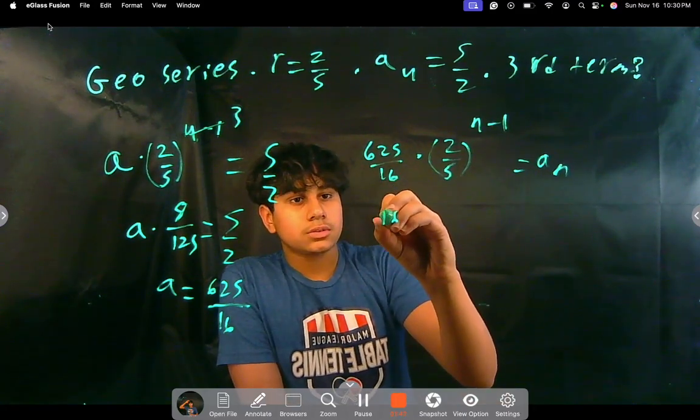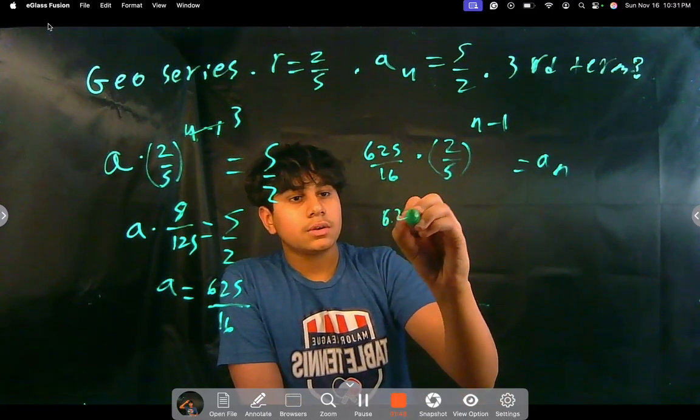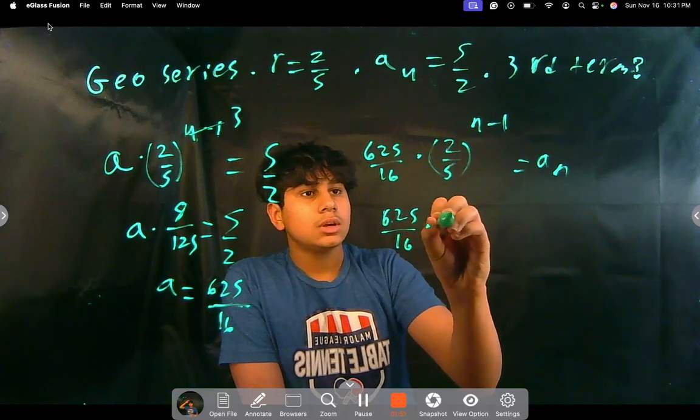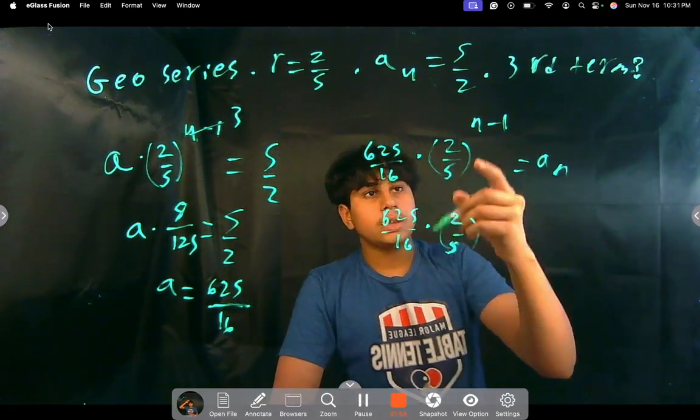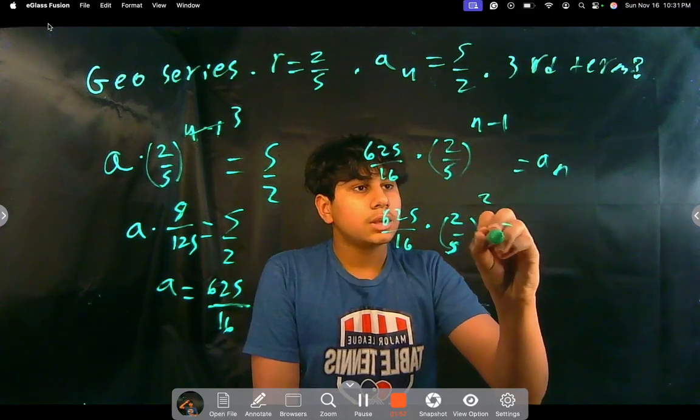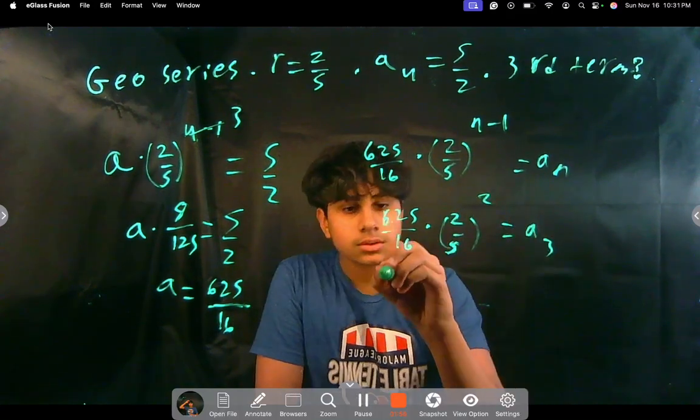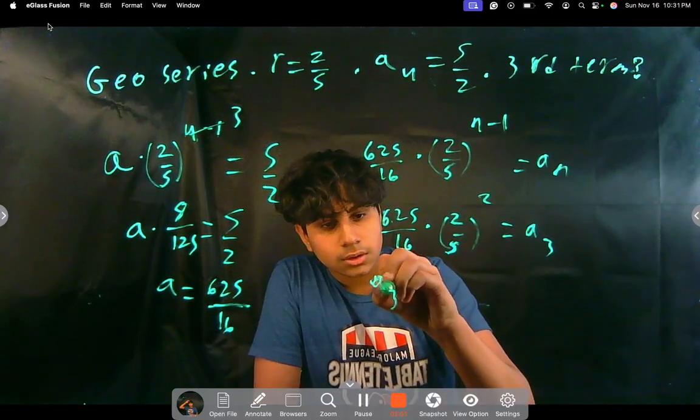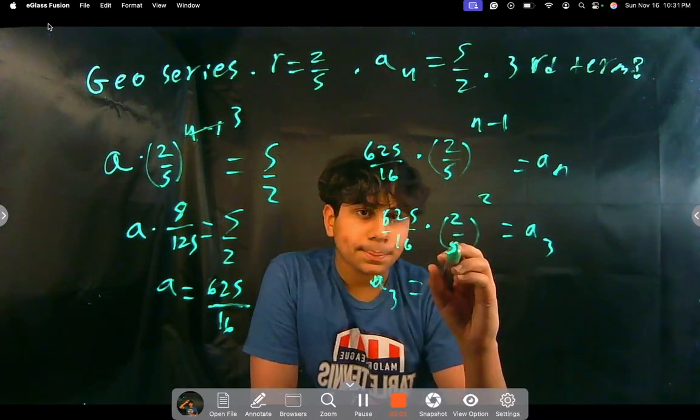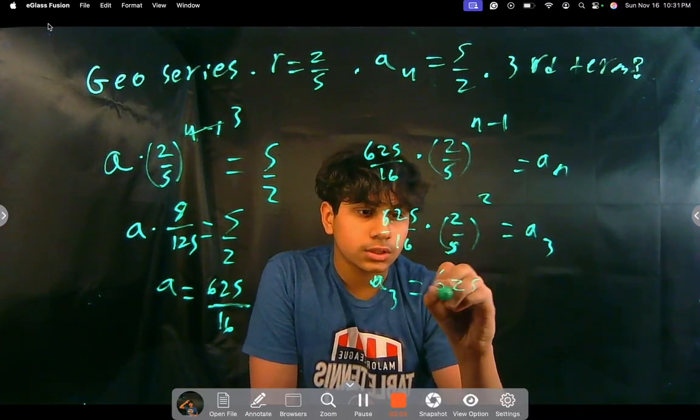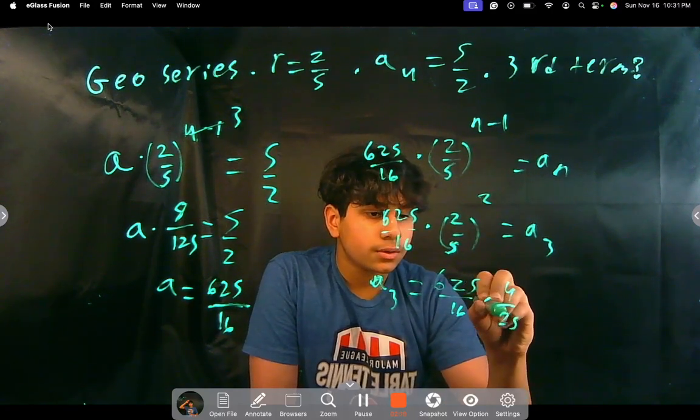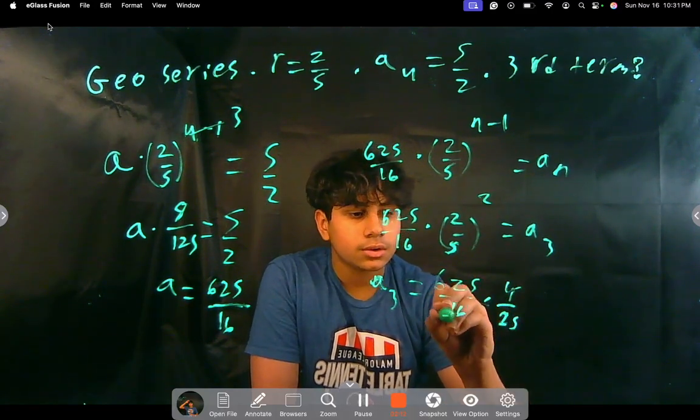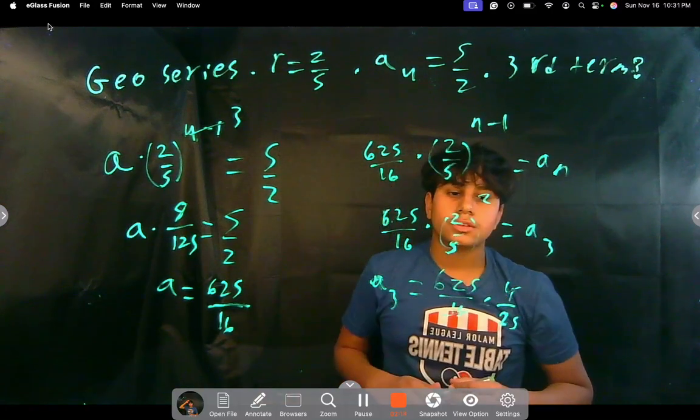We just put in the values, 625 over 16 times 2 over 5, to the power of 3 minus 1, because we put in 3 for n, so it'll be to the second power, equals a to the third.